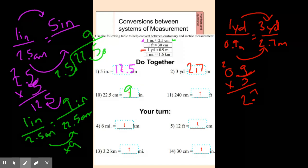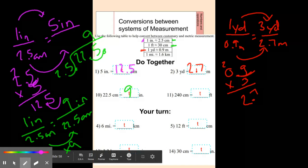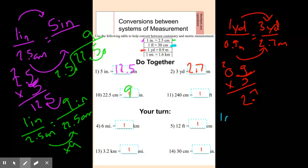And the last one, we're going from centimeters to feet. So we know that one foot, change colors one more time. We know that one foot is 30 centimeters. So one foot, 30 centimeters. We have 240 centimeters.